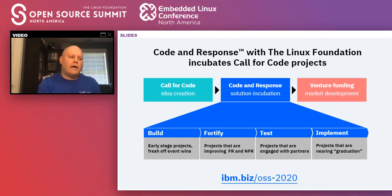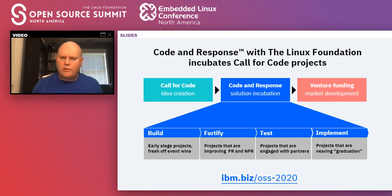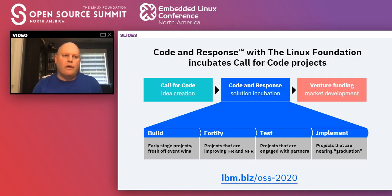So I've mentioned two programs. To be clear: Call for Code is the yearly competition. Code and Response with the Linux Foundation is the program for incubating those ideas. Projects come in from Call for Code — for example, the last two years' grand prize winners, runners up, and other interested open source projects. We help them build out solutions, matching them with skills, helping achieve non-functional goals, doing security audits, helping them scale, and testing them. We help them graduate by implementing their solution — getting to a milestone where they're either a sustainable company, perhaps with their first sale or contract, or simply sustaining themselves as open source projects.